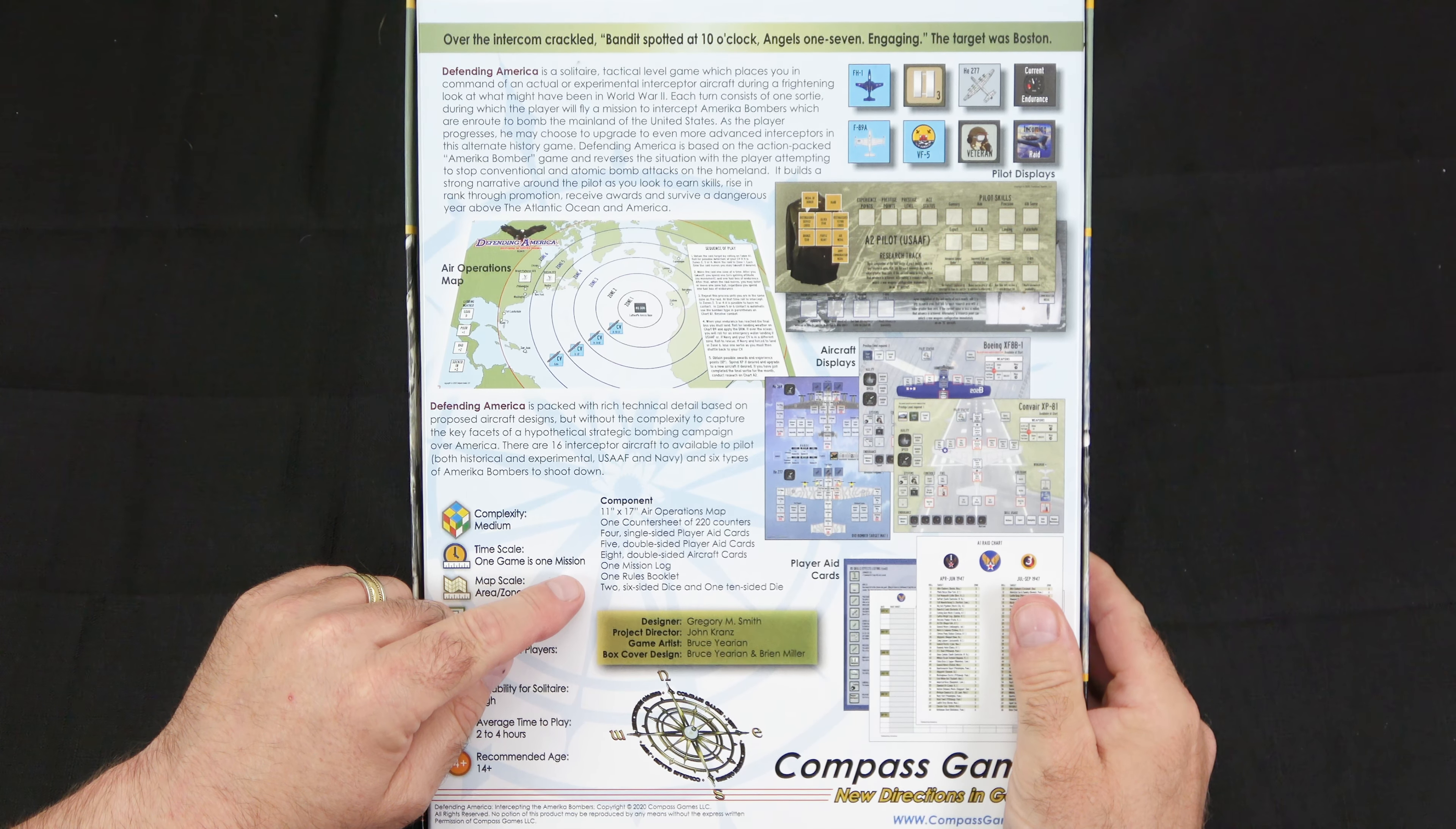Pilot prestige, research track, reassignment to a newer aircraft, stopping atomic attacks, and then we have some optional rules on page 19. You have multiplayer cooperative play, competitive play, and then the combination play with America Bomber Evil Queen of the Skies, which is going to be really cool because now you can tie the two together. You can have one player attacking America, one player defending America, and I think that's really awesome.